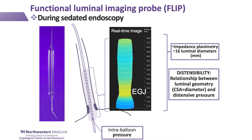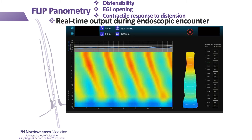FLIP evaluates distensibility of the esophagus at the esophagogastric junction and the esophageal body as the balloon is filled in a controlled manner. In addition to evaluating distensibility, we developed the FLIP planometry technique that depicts the dynamic changes related to the esophageal response to distension. The 16 luminal diameters along the length of the FLIP, as well as the intra-bag pressure, are plotted over time.